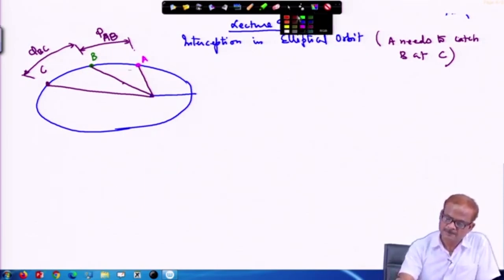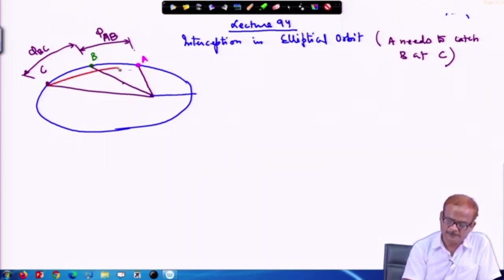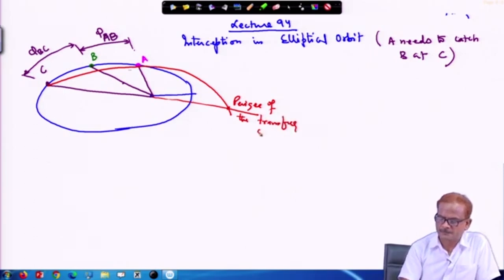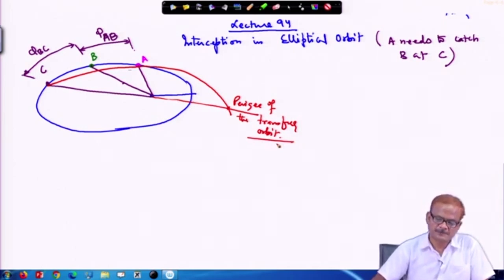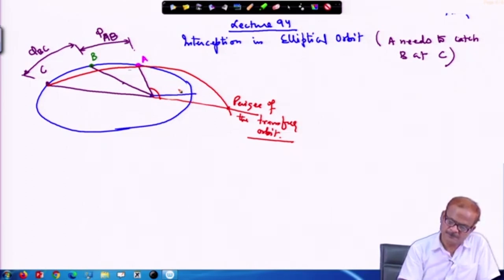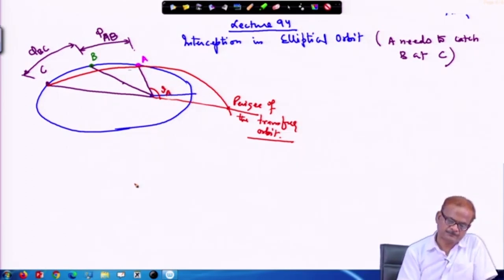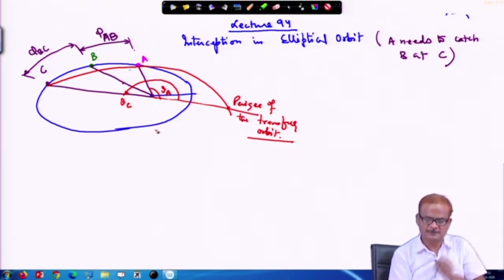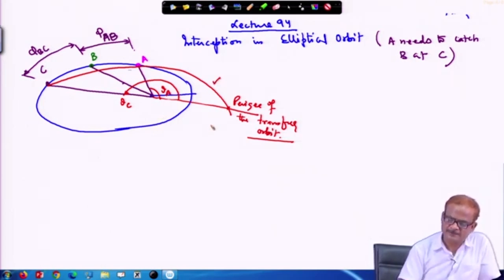We need to send the satellite in a faster orbit. For the chosen orbit, the perigee of the transfer orbit lies at a specific position, which we show as theta_a. Similarly, the location of C from the perigee is theta_c. We are not worried about theta_b because it does not lie on the transfer trajectory.